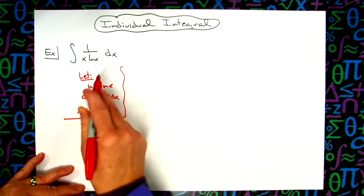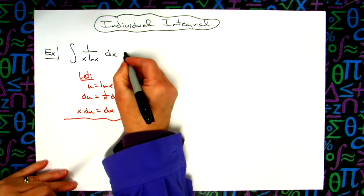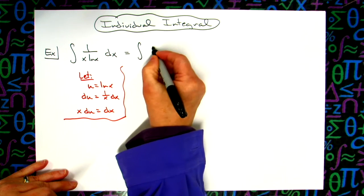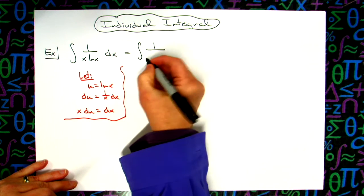Okay, then I'm going to come back up to that original integral and I'm going to start making my substitutions. Alright, so we'll still have a 1 on top. That x will remain there.